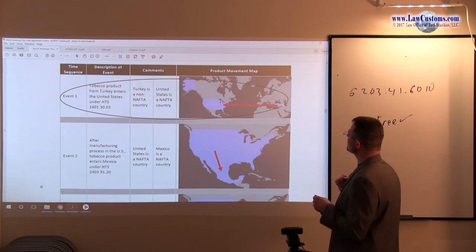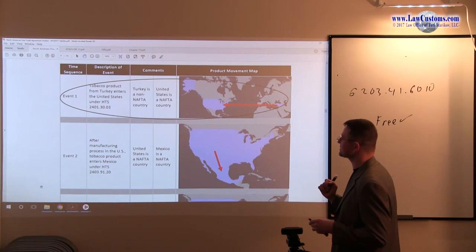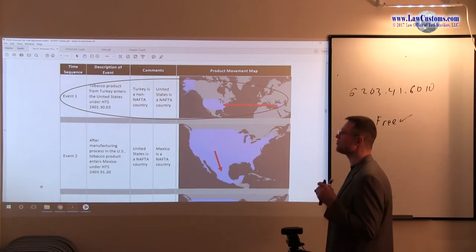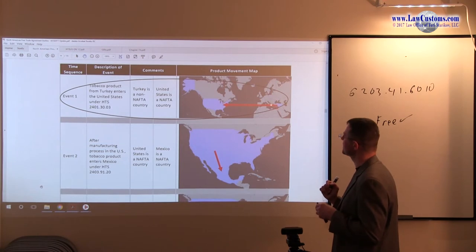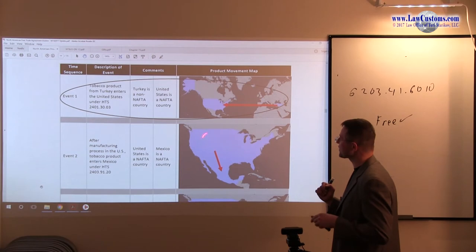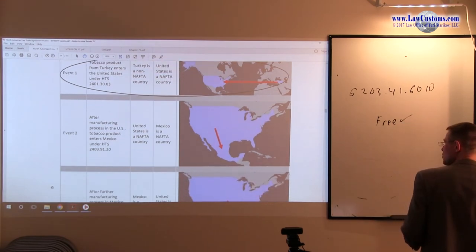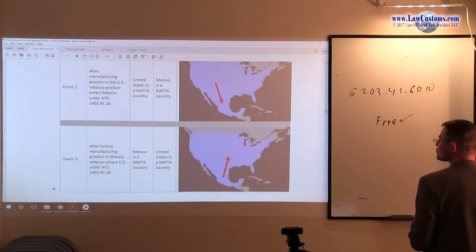When you see a product, you focus on whatever change is taking place in a NAFTA country from NAFTA country. Here you have Turkey going to the United States, so the question is what's taking place in the United States once it goes to Mexico, and then it goes from Mexico back.